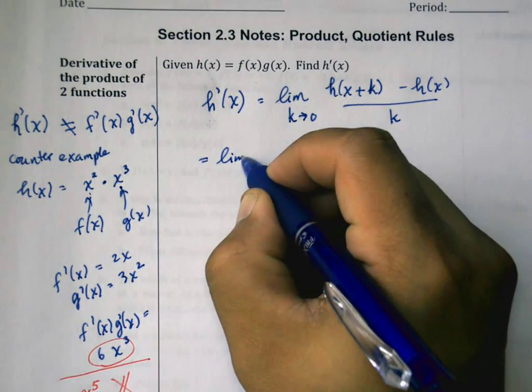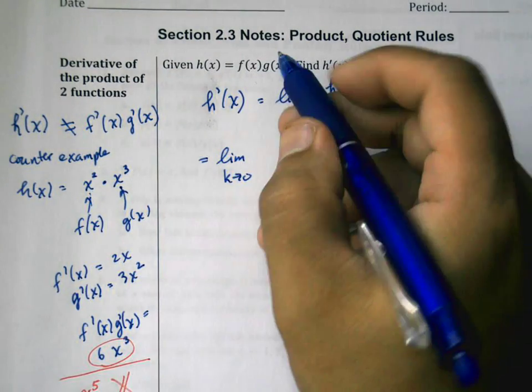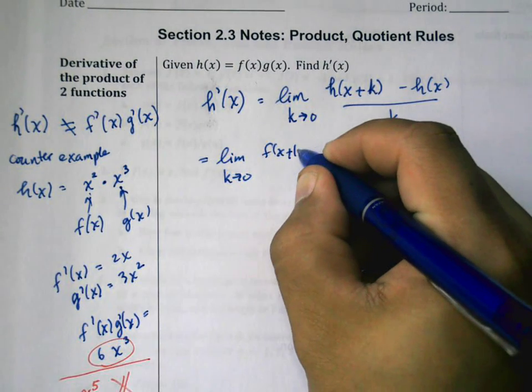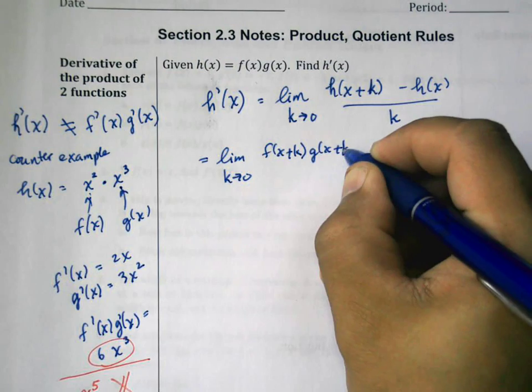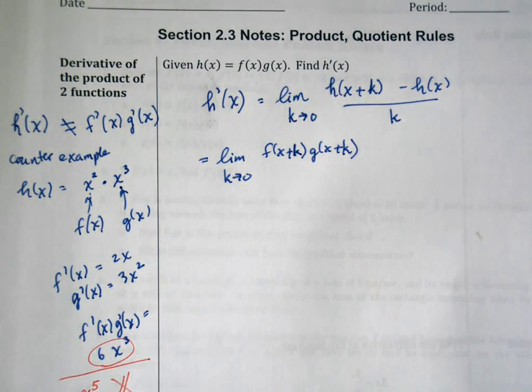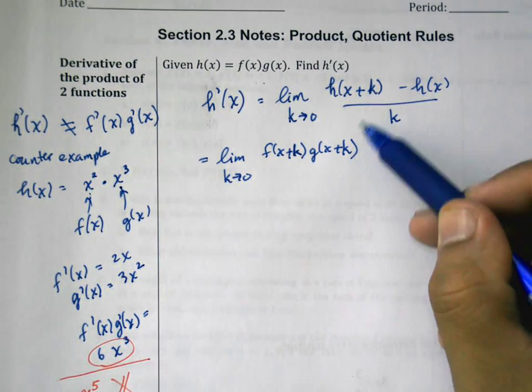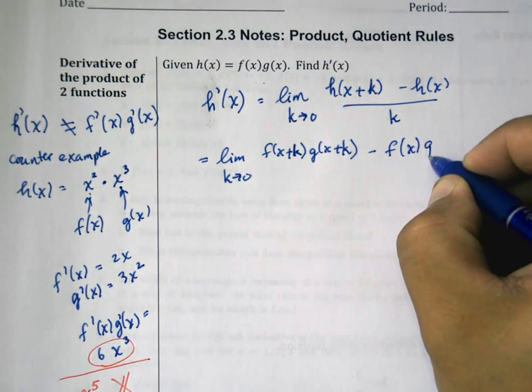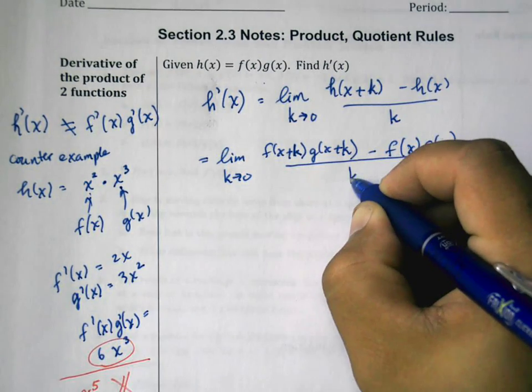But h of x plus k is really f of x plus k times g of x plus k, so all I'm really doing is taking the definition of this function and substituting x plus k into here, minus f of x times g of x, all of this over k.